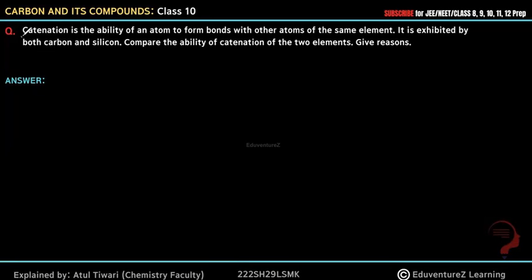Hello everyone, our question is: catenation is the ability of an atom to form bonds with other atoms of the same element. It is exhibited by both carbon and silicon. Compare the ability of catenation of two elements, give reasons.